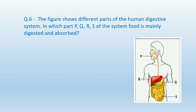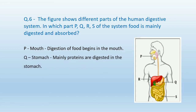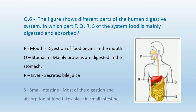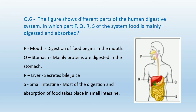Question number 6: The figure shows different parts of the human digestive system, in which parts P, Q, R, and S of the system food is mainly digested and absorbed. P is the mouth — digestion of food begins in the mouth. Q is the stomach — mainly proteins are digested in the stomach. R is the liver — the liver secretes bile juice. S is the small intestine — most of the digestion and absorption of food takes place in the small intestine.